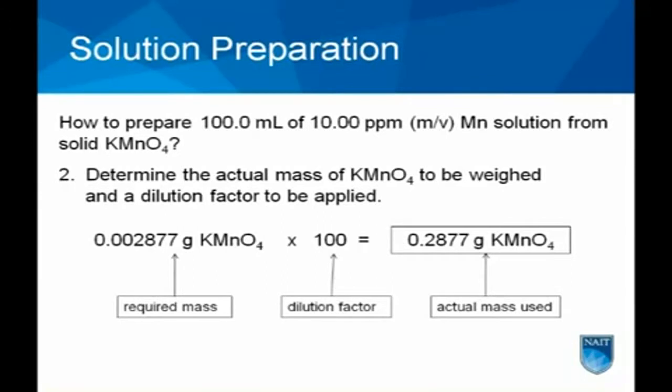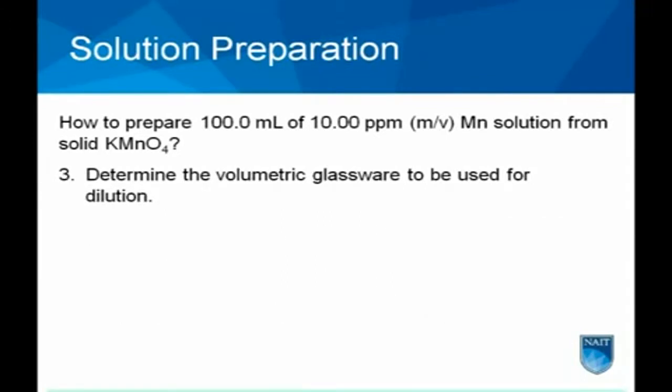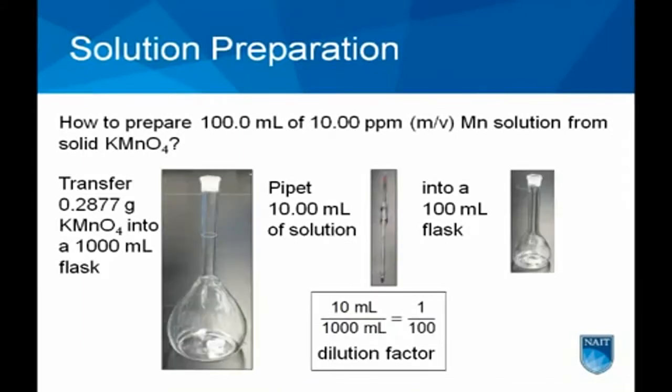The simplest and most accurate method to perform a dilution is to dissolve the calculated mass of potassium permanganate in 1,000 milliliters and then transfer a 10 milliliters aliquot into the final solution volume of 100 milliliters. This approach minimizes glassware error associated with small volume pipettes and volumetric flasks. However, solution waste is greater.